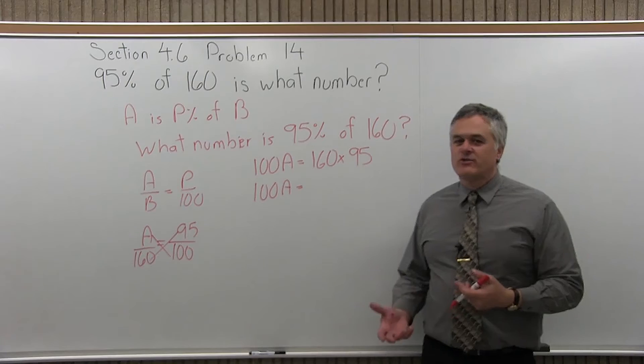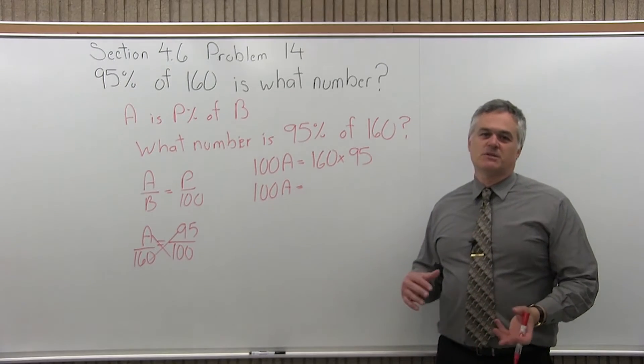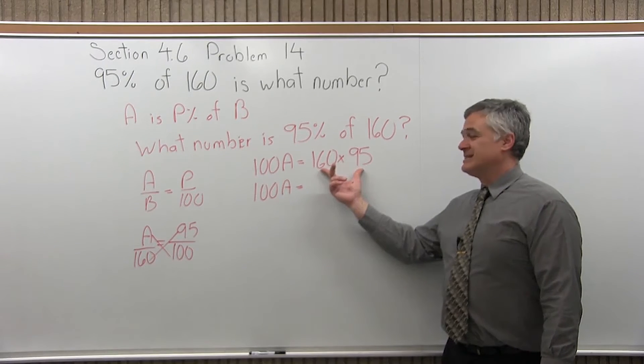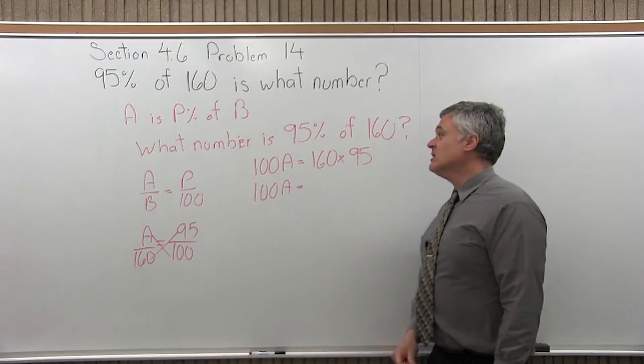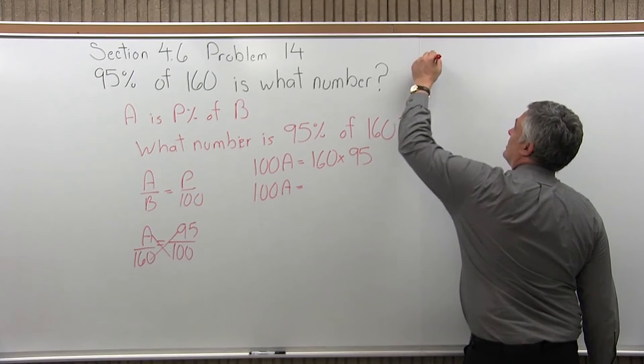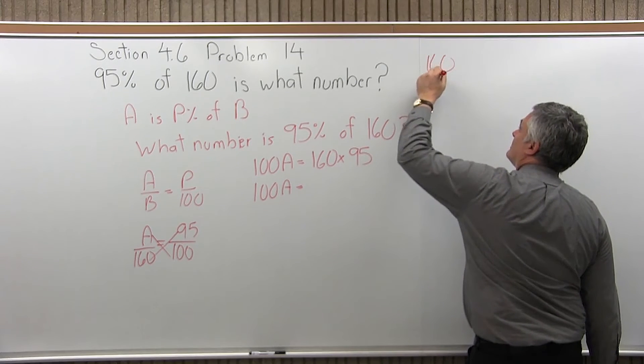Some of the other multiplications, I had tricks where I could ignore zeros, multiply what's left, put the zeros back. That would amount to multiplying 16 times 95, which is still really big. So I'll just go off to the side and multiply it out.